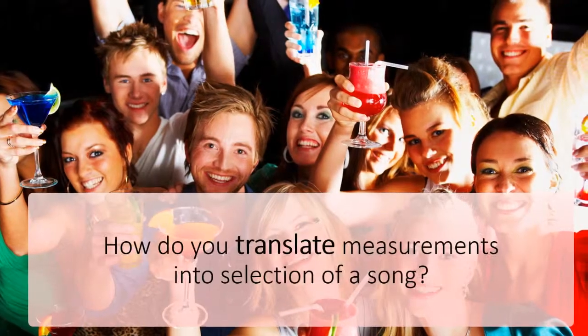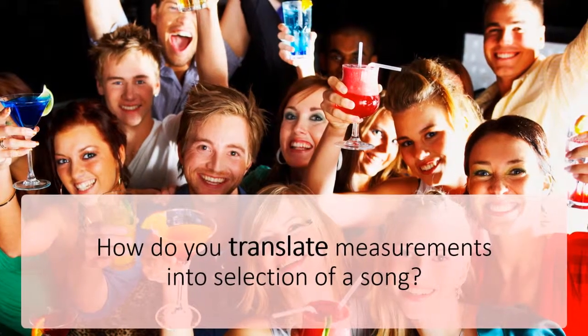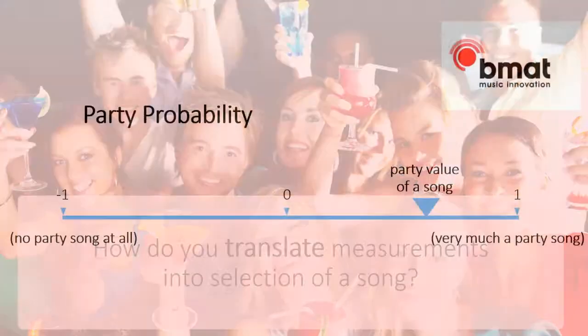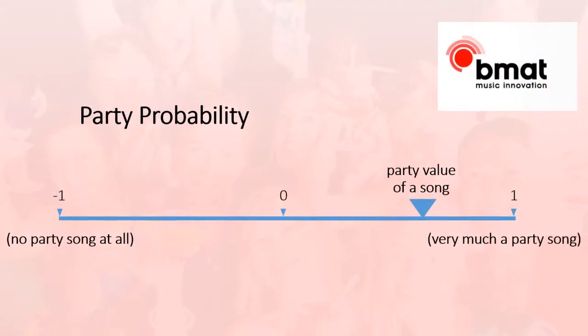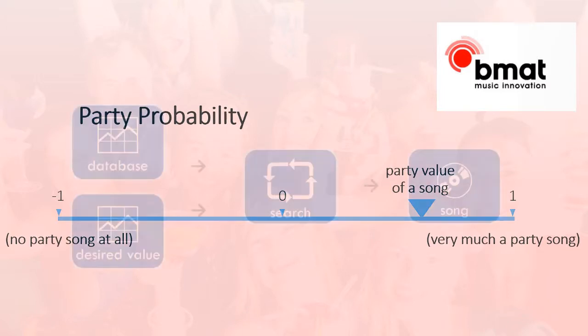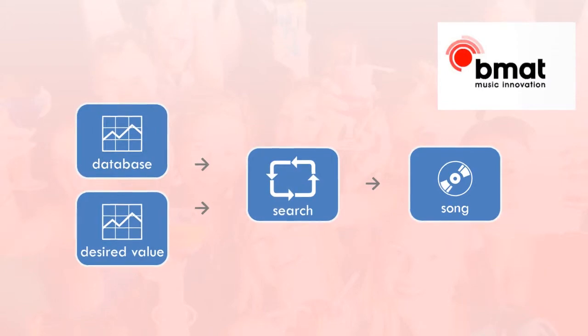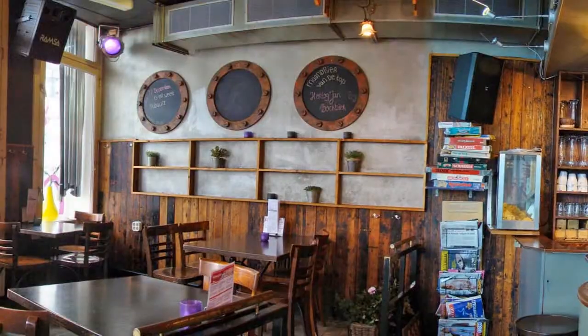How do you translate these measurements into the selection of a song? Client BMAT developed software that gives songs a rating on variables such as party probability. One can also search a database for songs with a certain party value.